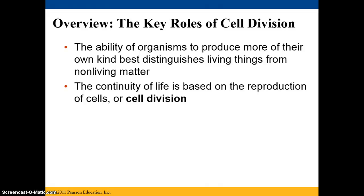The ability of an organism to produce more of their own kind best distinguishes living things from non-living matter. In other words, reproduction — or if you were a unicellular organism, cell division — is key to being considered an organism in terms of how scientists think.